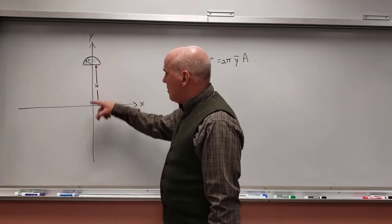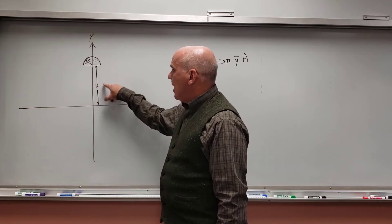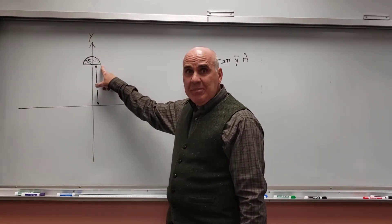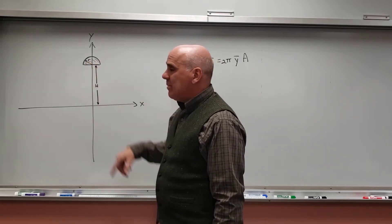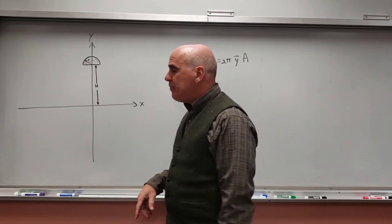I'm going to take the semicircle, and it's above the origin a distance h. The bottom of the semicircle is above the origin by a distance h, and the radius of the semicircle is r, little r.